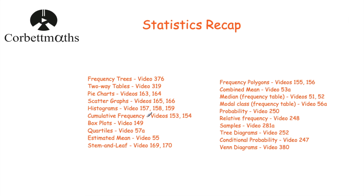Cumulative frequency means running total. Know how to complete cumulative frequency tables, draw cumulative frequency curves, and use those curves to find estimates for the median (halfway across and down), the lower quartile (a quarter of the way through), the upper quartile (three-quarters of the way), and the interquartile range (upper quartile minus lower quartile). Box plots have five lines: the lowest value, lower quartile, median, upper quartile, and highest value — you box around the middle three and join to the extremes.